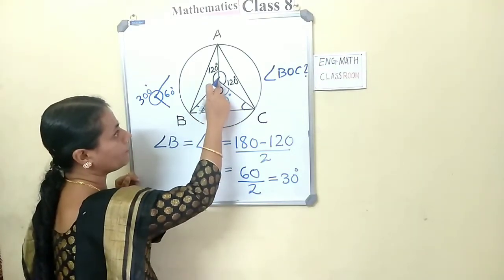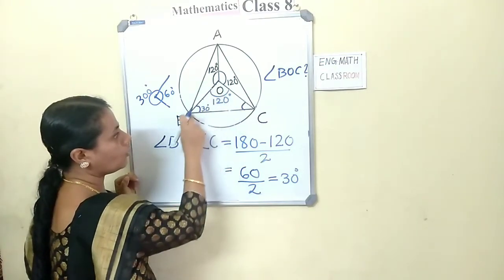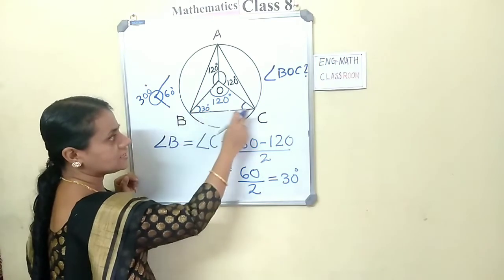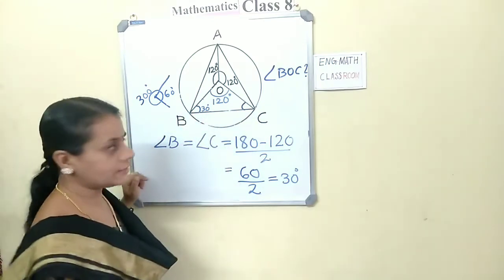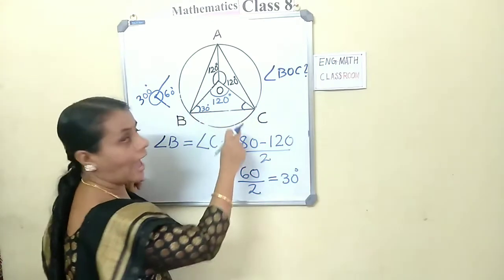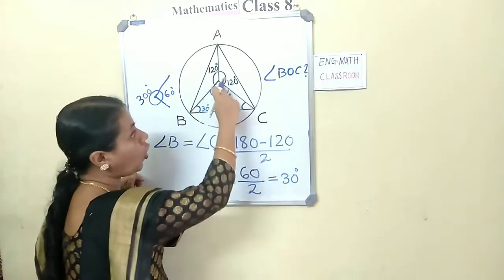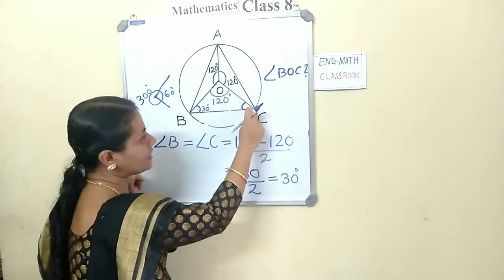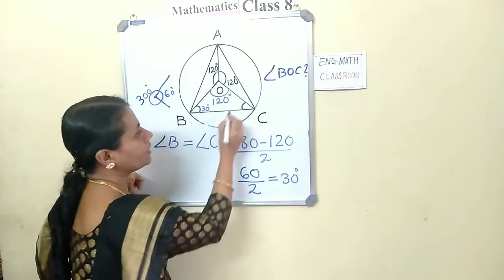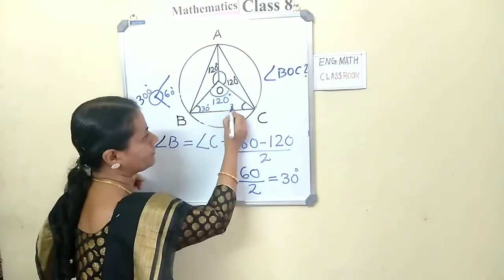We can now mark these angles on the figure: angle OBC is 30 degrees and angle OCB is 30 degrees.